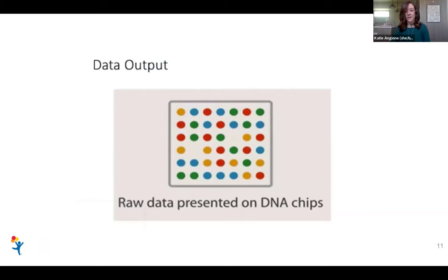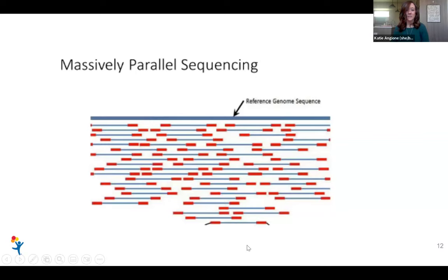This is a representation of what a microarray can show — how the lab can detect whether there is the expected amount of genetic content at a certain location, or if there's less material than expected, which would show a deletion, or more material, which would show a duplication. It kind of shows up as all these little lights. This is how the lab looks at a lot of genetic information at the same time. With next-gen sequencing, all the DNA is chopped up into little pieces, put back together, and lined up with the reference genome to see if anything is extra or missing.